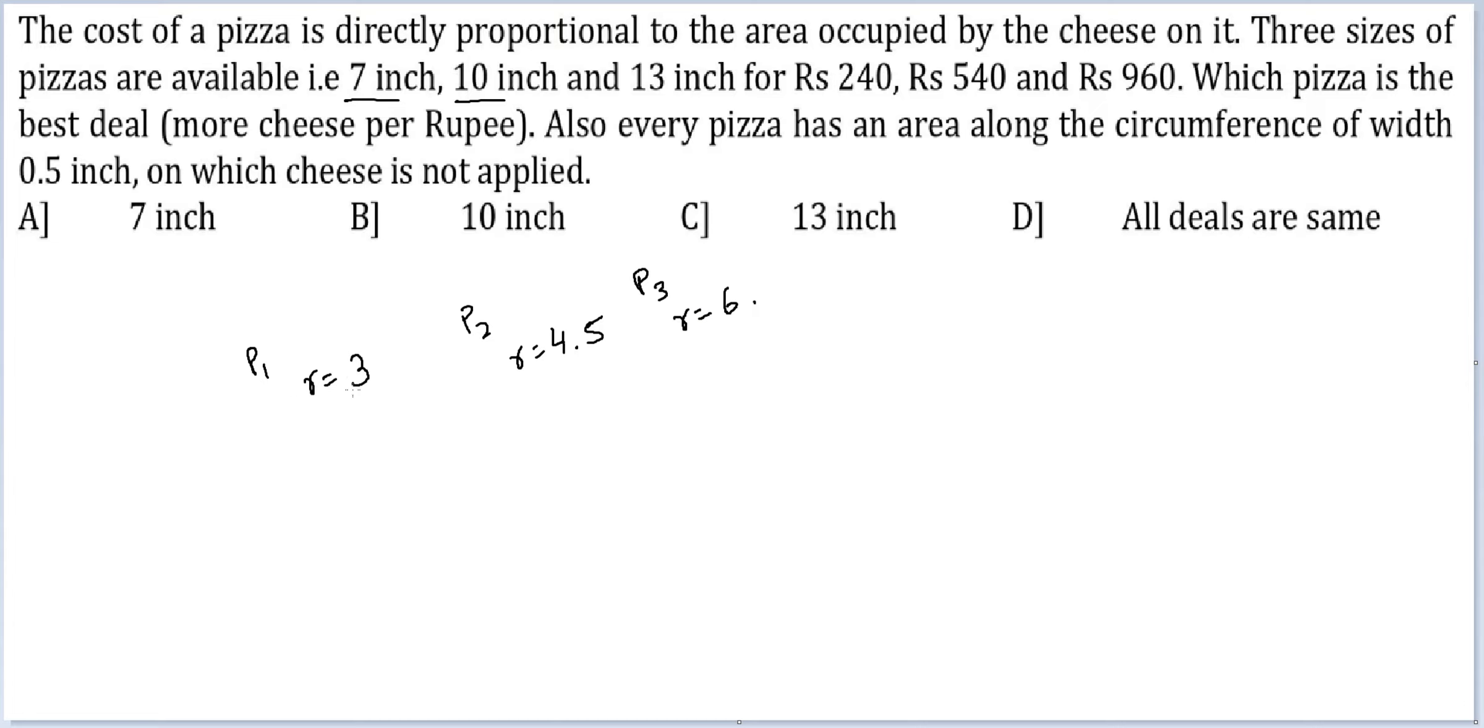So radii are in the ratio 2 is to 3 is to 4. Radii in the three cases are in the ratio 2 is to 3 is to 4. Therefore area will be in the ratio 4 is to 9 is to 16.